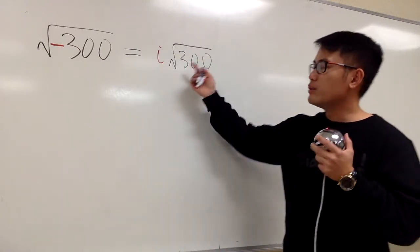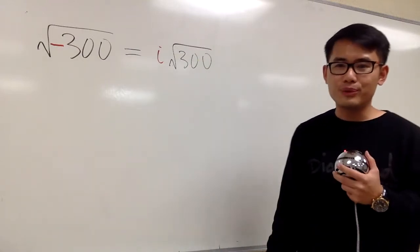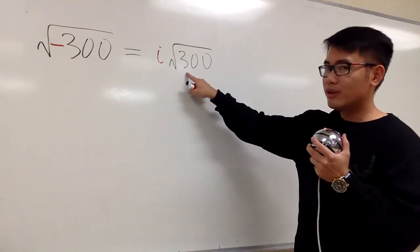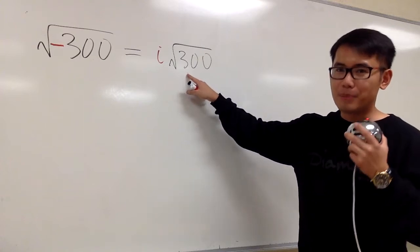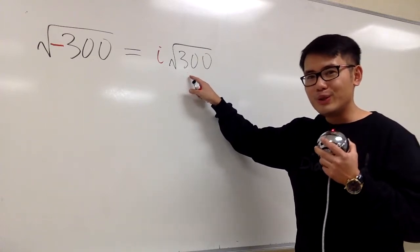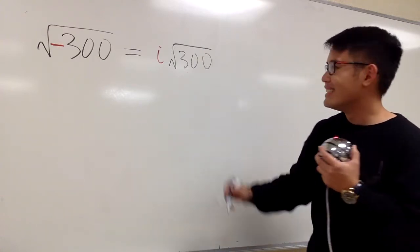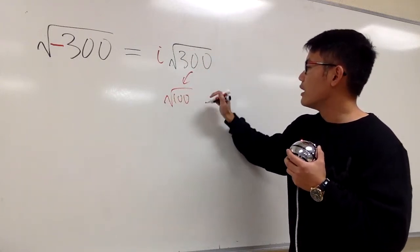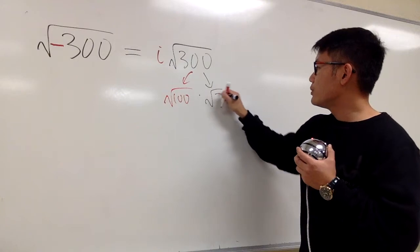And square root of 300, is there anything we can do? Yes, we ask ourselves what times what will be 300, and one of the numbers shall be a perfect square. I'm going to use 100 times 3. So let me break this down as square root of 100 times square root of 3.